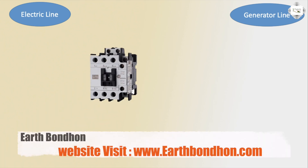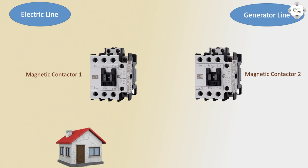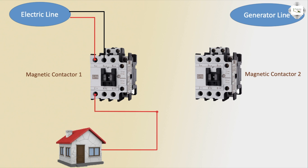Load side: electric line, electric pole connection to electric line. Second, generator line electric source — magnetic contact one. Magnetic contact two: home line connection to generator or electric line control to home line. Fast electric line phase connection — magnetic contact terminal one connection, same to neutral connection. Second terminal outgoing to home line connection phase.